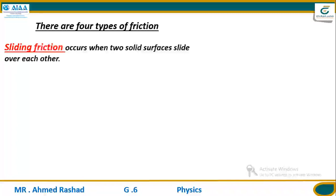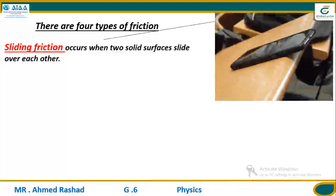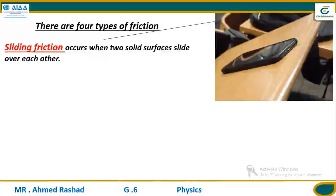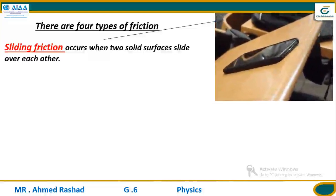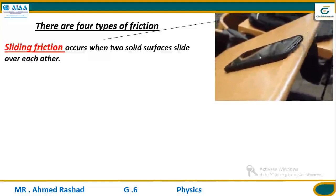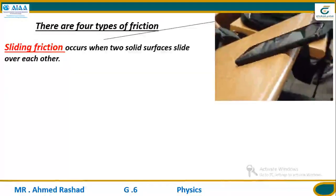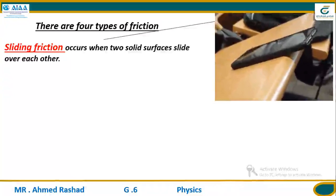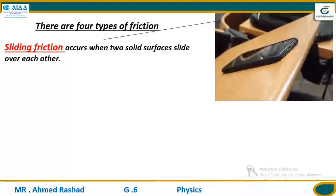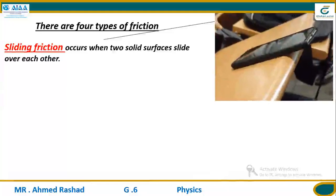Sliding friction occurs when two solid surfaces slide over each other — that is, when they slide together. You can watch the video describing the sliding between a phone and a chair. That depends on the type of surfaces between the phone and the chair and how hard they are pushing together. Sliding friction occurs between solid surfaces like a phone and a chair, when they slide together.